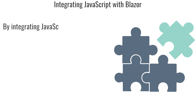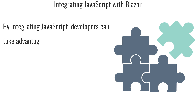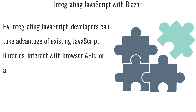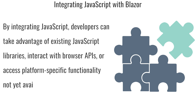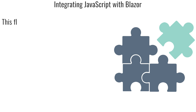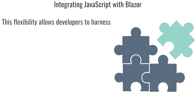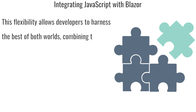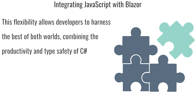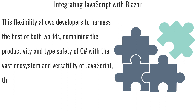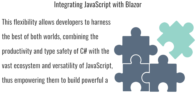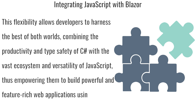By integrating JavaScript, developers can take advantage of existing JavaScript libraries, interact with browser APIs, or access platform-specific functionality not yet available in Blazor. This flexibility allows developers to harness the best of both worlds, combining the productivity and type safety of C# with the vast ecosystem and versatility of JavaScript, empowering them to build powerful and feature-rich web applications using Blazor.